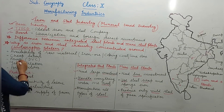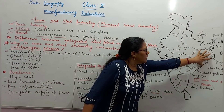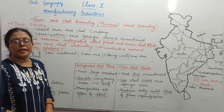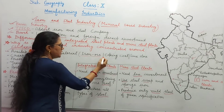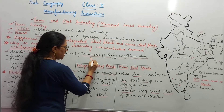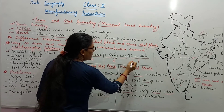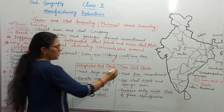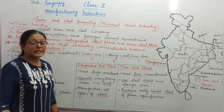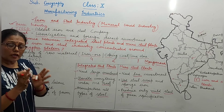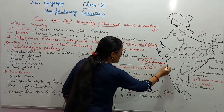The first reason is raw material. The Chota Nagpur Plateau region has raw materials in proportions needed for steel making: 4 parts iron ore, 2 parts coking coal, and 1 part limestone. Along with this, manganese is also needed, as it is used for hardening steel.